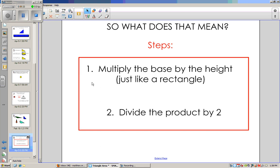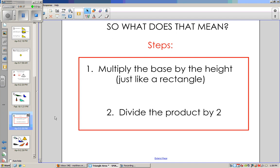So what does that mean? Well, we have two steps. First, multiply the base times the height, just like a rectangle, just like a square, just like a parallelogram. But then we divide by two because the triangle is really half of one of those shapes.